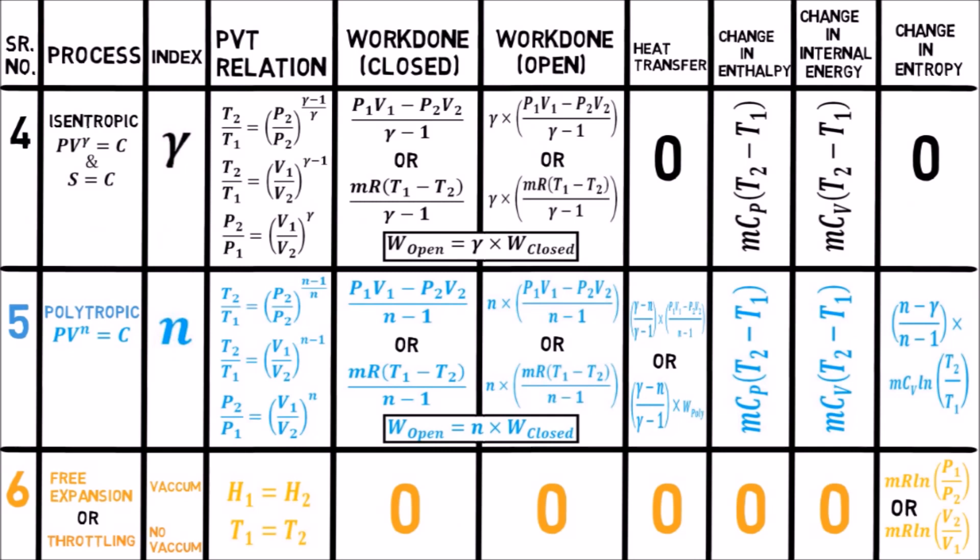Fourth: for adiabatic process, heat transfer and change in entropy are zero, hence work done equals change in internal energy due to the first law equation. Fifth: open system work done is gamma times closed system work done for adiabatic process, and open system work done is n times closed system work done for polytropic process. Sixth: in case of free expansion and throttling process, dH, dT, dW, dQ, and dU are all zero, but dS is not equal to zero.